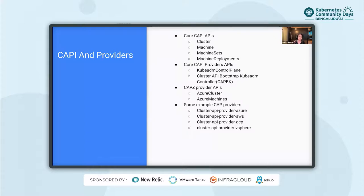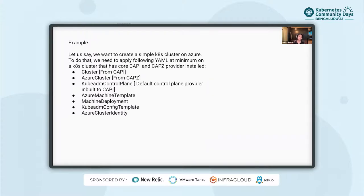This can sound a little complicated, so we will use an example to understand how this works. But before diving into the example, I would like to mention some high-level things. CAPI hooks in with providers such as CAPZ and CAPA and others to help provision and manage life cycles. The providers are responsible for carrying out the infrastructure actions and updating the appropriate status and conditions. CAPI also has built-in providers such as the Cluster API Bootstrap KubeADM provider, whose job is to bootstrap a Kubernetes node, though CAPI is flexible and can be used with bootstrap providers other than KubeADM. CAPI also has control plane providers which are responsible for managing control plane machines.